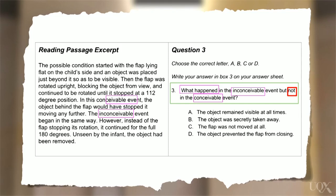Let's look at C. So it says that the flap didn't move. And D, it says that the object prevented the flap from closing. I think B might be the answer.